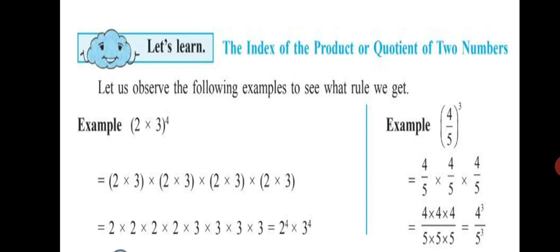Let's look at another example: (4/5) raised to 3. In multiplication form, you write it as (4/5) multiplied by itself 3 times since the index is 3. The numerators multiply together: 4 × 4 × 4, and the denominator: 5 × 5 × 5. This equals 4 raised to the power of 3 upon 5 raised to the power of 3.